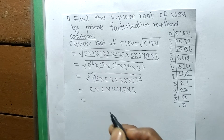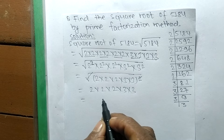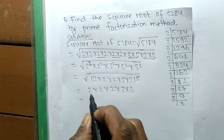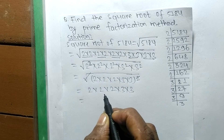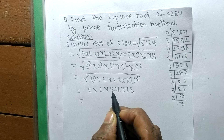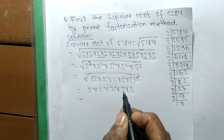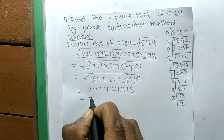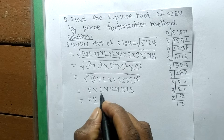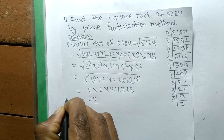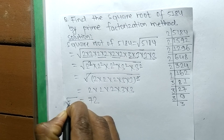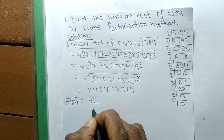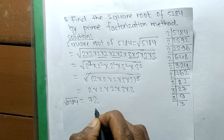Now we find the product of all these numbers. 2 times 2 is 4, 4 times 2 is 8, 8 times 3 is 24, and 24 times 3 is 72. So the square root of 5184 is 72.